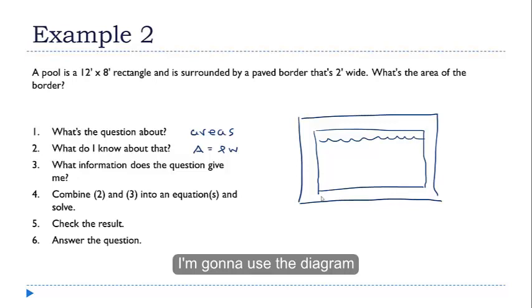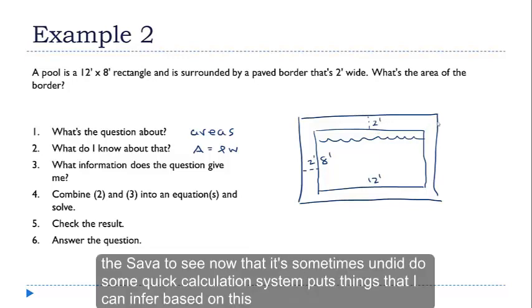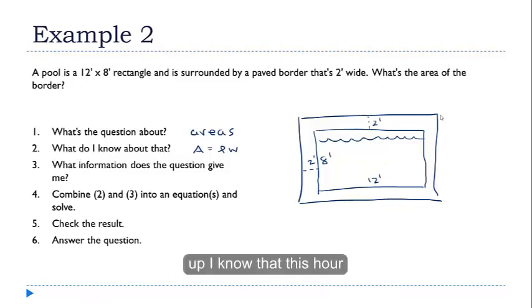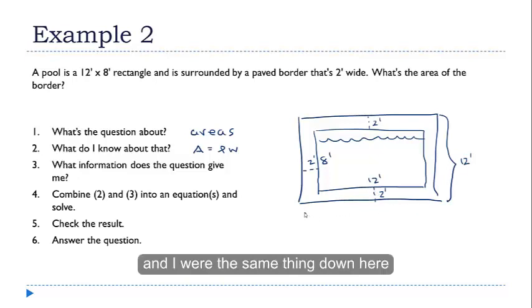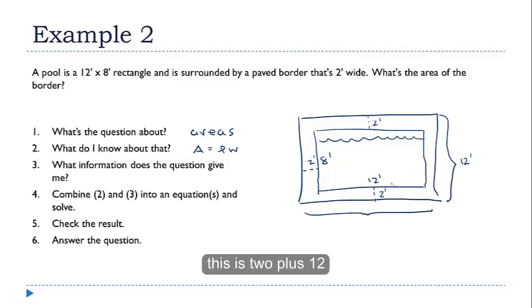So now I'm going to use the diagram to organize my information. The pool is 12 feet by 8 feet. And this paved area is a uniform 2 feet across. So let's see now. I'm going to do some quick calculations here. Some quick things that I can infer based on this. I know that this outer rectangle is 2 feet plus 2 feet plus 12 feet. So this is the 8 feet here. It's 2 plus 8 plus 2, so this height here is 12 feet. And I'm going to do the same thing down here. This is 2 plus 12 plus 2, which is 16.